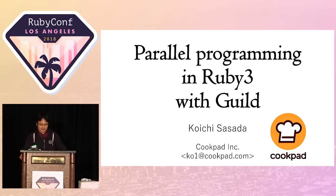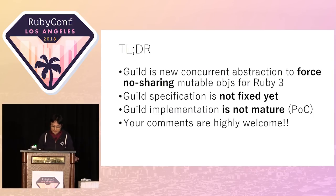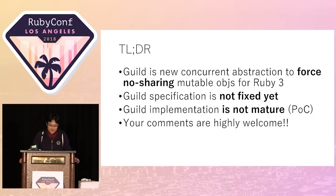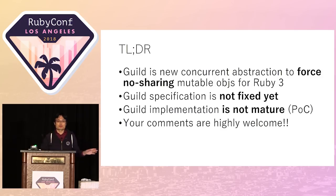This talk is not about transient heap, but about Guild. Back to the main topic. Guild is a new concurrent abstraction for Ruby 3 that forces no sharing of mutable objects. The Guild specification is not fixed yet. Also the Guild implementation is not finished — we have only a buggy implementation. So your comments and contributions are highly welcome.